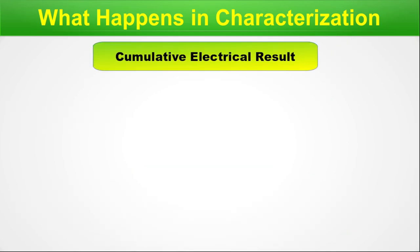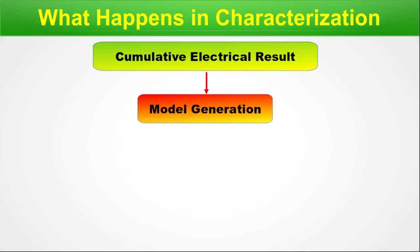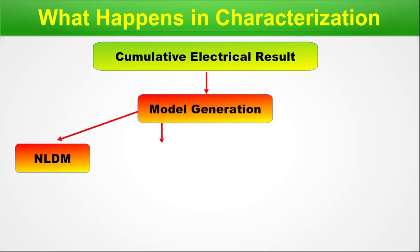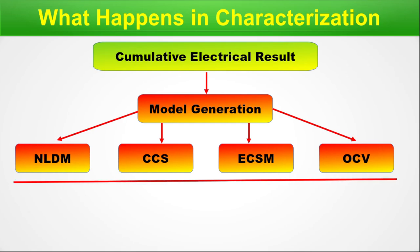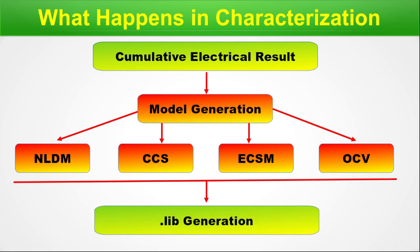The cumulative electrical result from all the SPICE simulations launched via LSF or UGE is received by the characterization engine. We then proceed toward model generation in different directions: it may be NLDM, CCS, ECSM, or OCV data. All these types of model generation are handled by the characterization engine, and finally all this data is placed in ASCII format into the .lib file. The .lib file is thus an ASCII file.